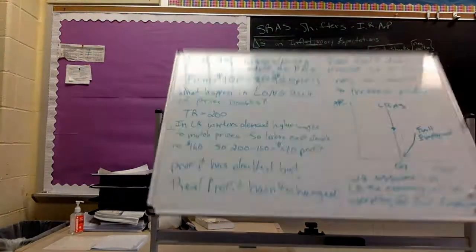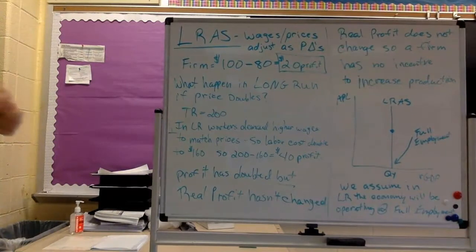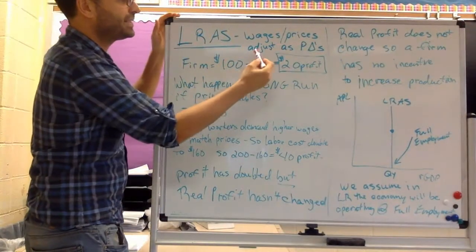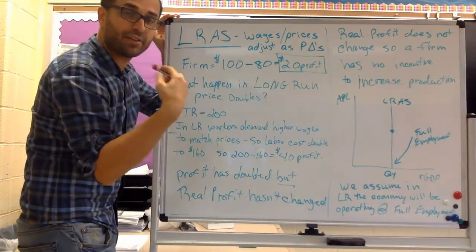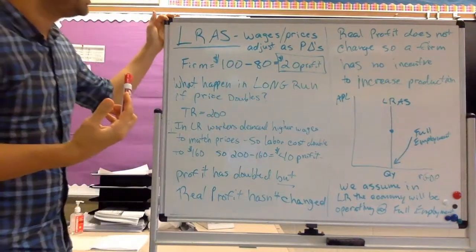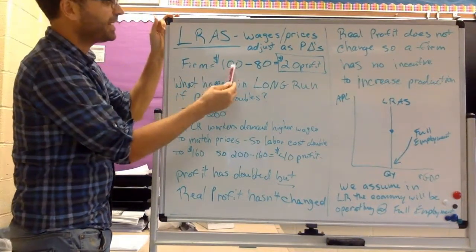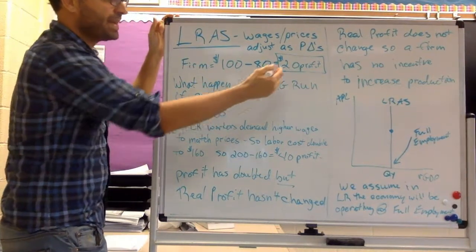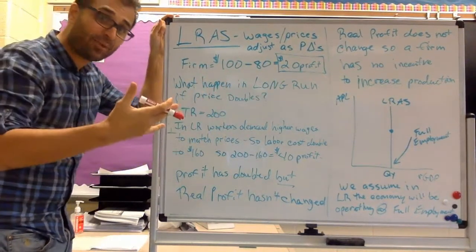Now what happens in the long run? Same example. In the long run, wages and prices, they adjust. They're not sticky. They're adjusting with the changes in price. So a firm, in this case, $100 minus $80, they were making $20 profit. And then we say, what happens if the long run, what happens to the long run supply if price doubles?